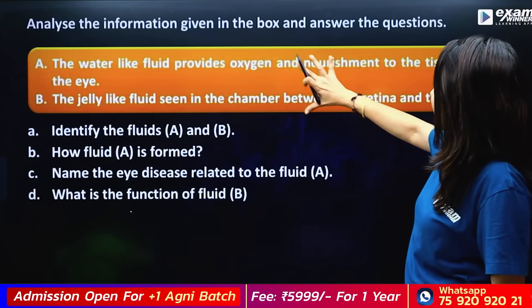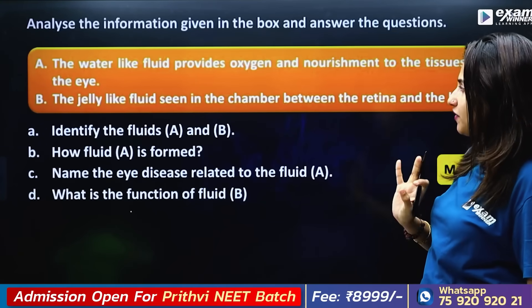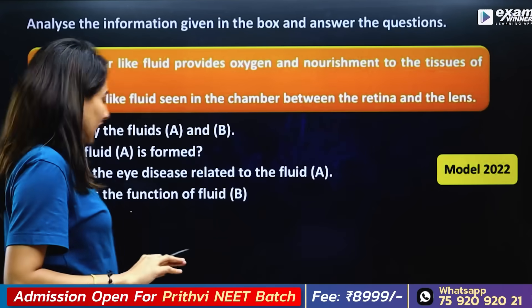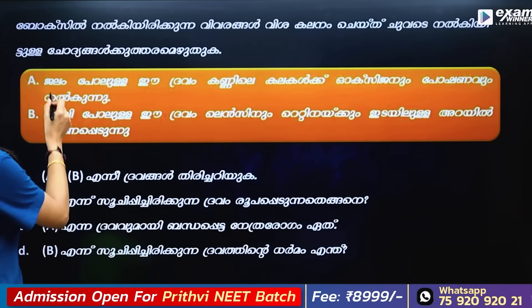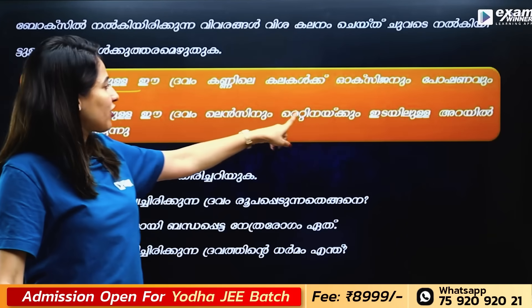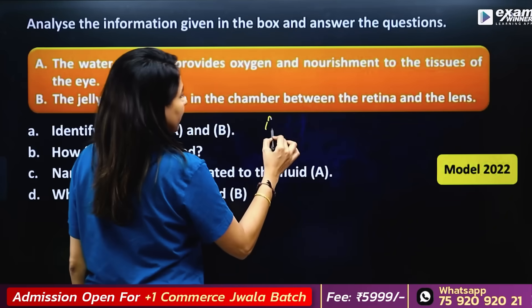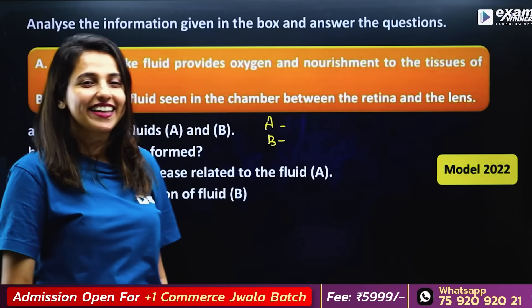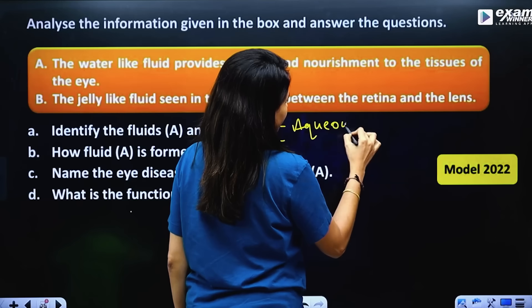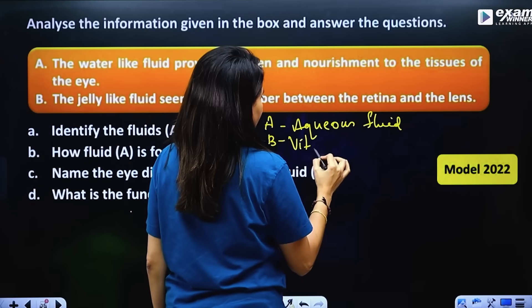Analyze the information given in the box and answer the question. A water-like fluid provides oxygen and nourishment to the tissue of the eye, and a jelly-like fluid is seen in the chamber between the retina and the lens. The watery-like fluid is aqueous fluid and the jelly-like fluid is vitreous fluid.